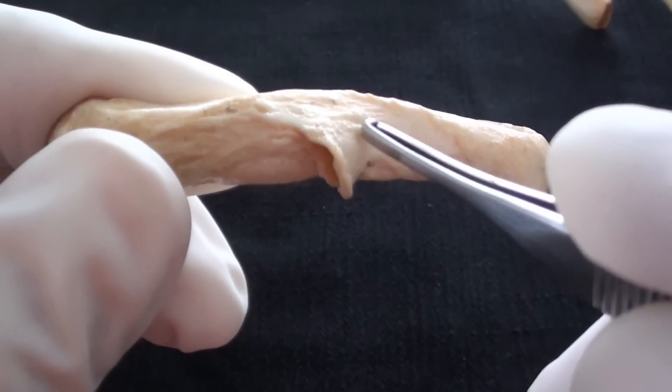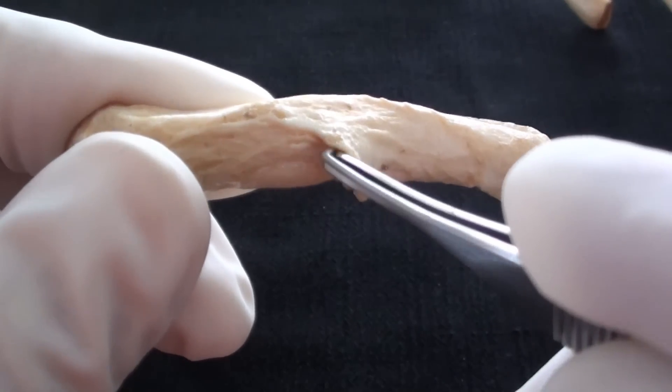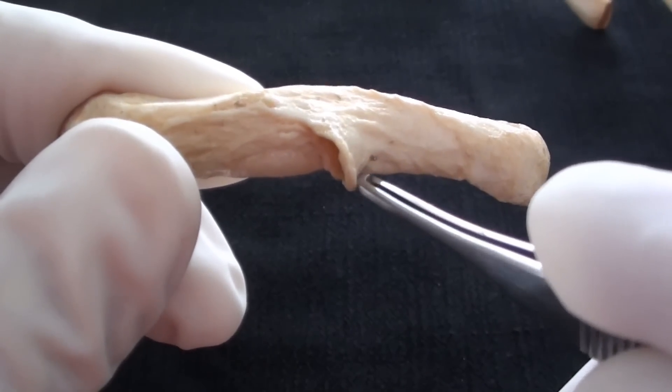And here is much more rough, an uneven non-articular part of the tubercle.